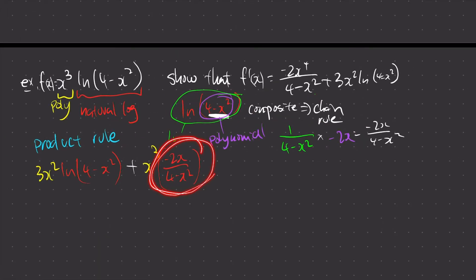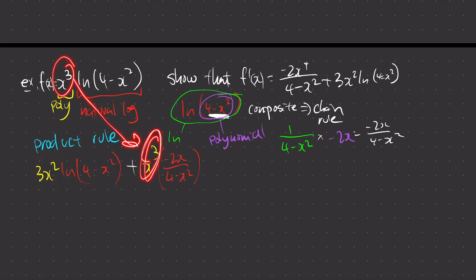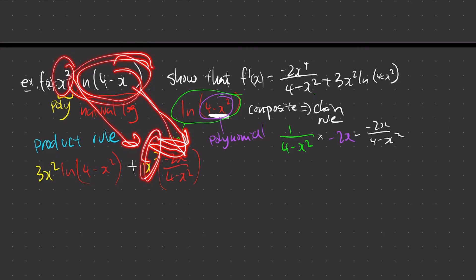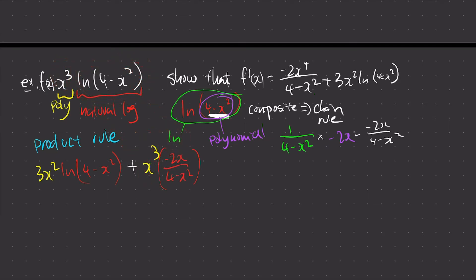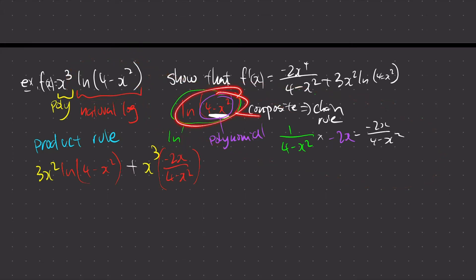What are we supposed to put here? We're supposed to put the derivative of the second function, because in product rule it's: d the first, don't d the second, then don't d the first, copy it down, then d the second. So if I differentiate that, I get this using chain rule — just as explained.